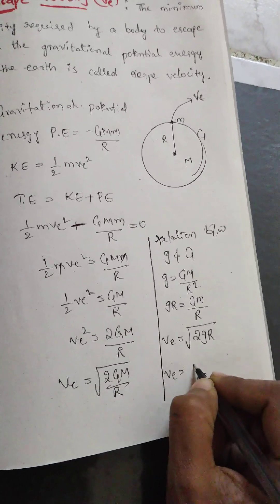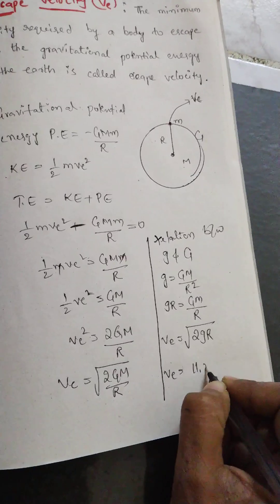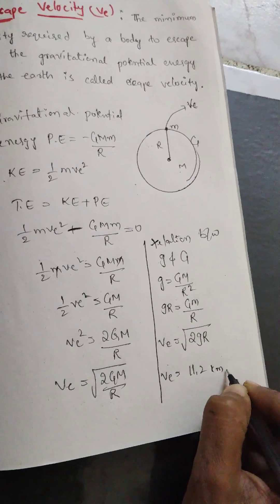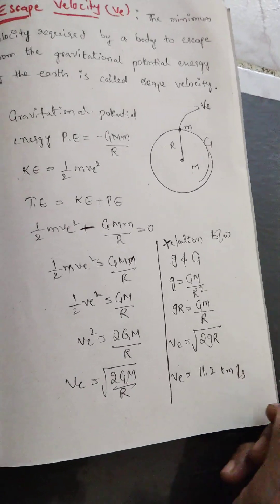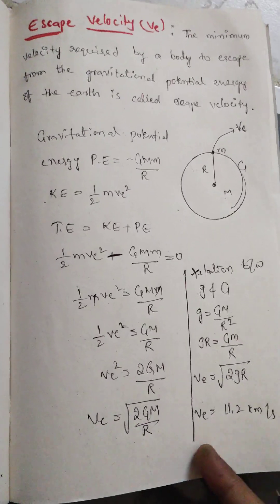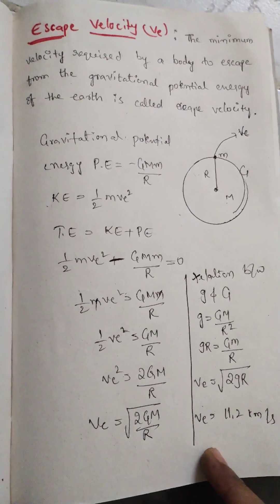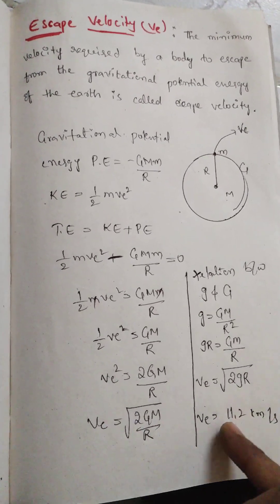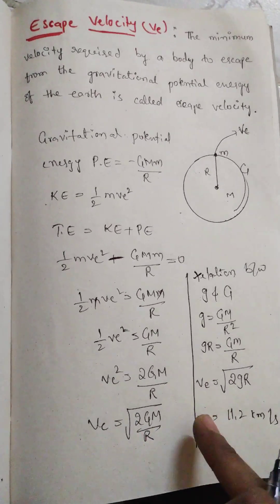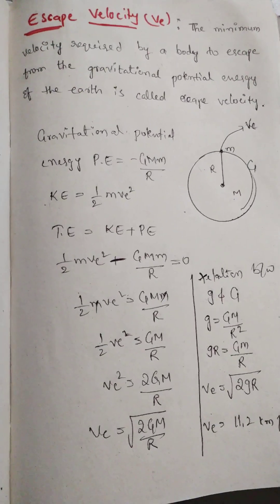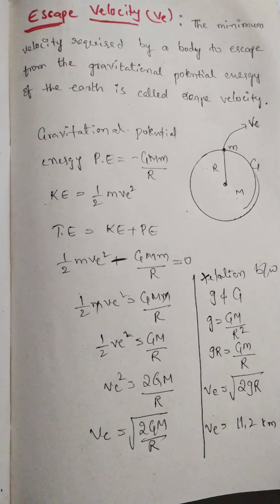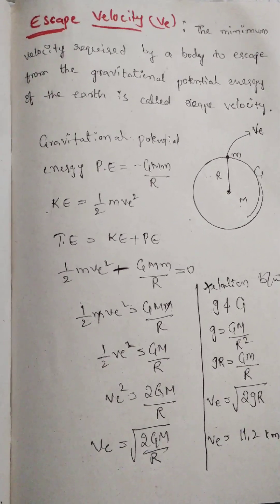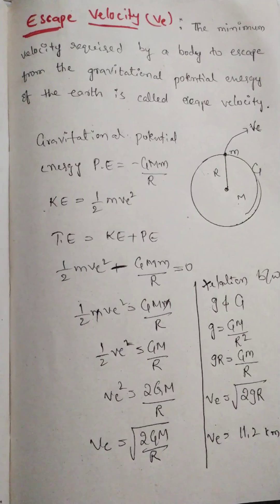The value of escape velocity is 11.2 km per second. If you give a body this much velocity, it will escape from the Earth's gravitational field. Thank you for watching. If you like this video, share it with your friends and subscribe to my channel.